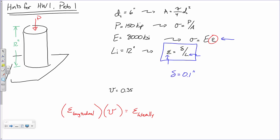There was a hint in the problem: the cylinder is going to get shorter, but the diameter is going to get larger. So if I've got the lateral strain, the lateral strain equals the change in length over the original length in that lateral direction — which is the diameter. Then we can say the final diameter is the initial diameter plus that delta. And that delta is not the same as the axial delta.